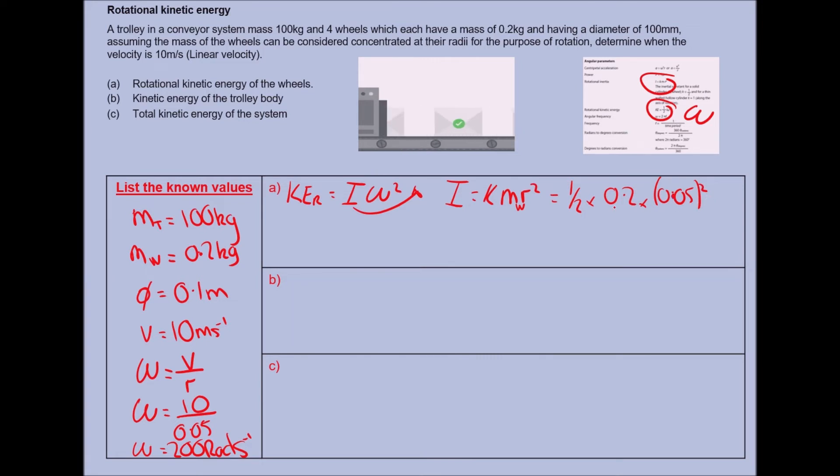I'm going to pop that in some brackets because it's getting squared. Feel free to get that answer and add it to your list if you want, but I is equal to, I'll give you the answer on your calculator, 2.5 times 10 to the minus 4 kilogram meters squared.